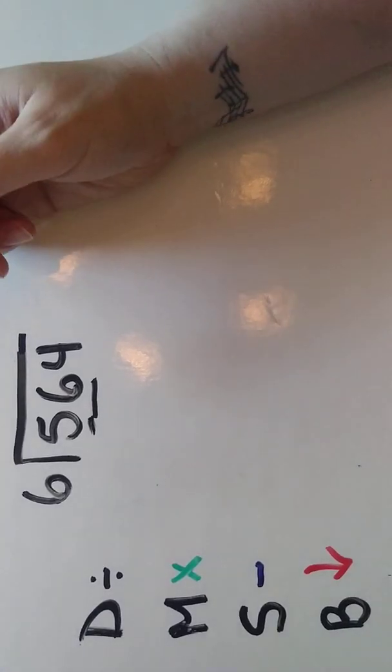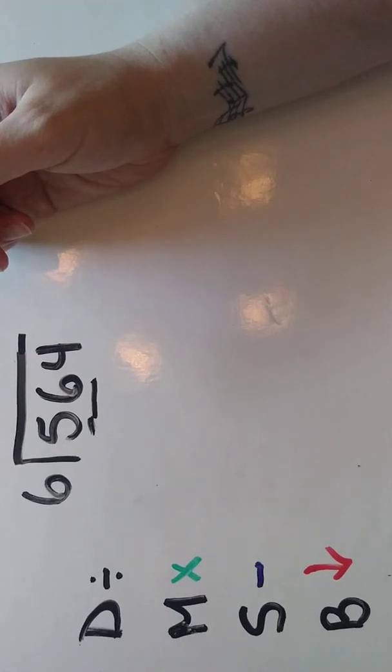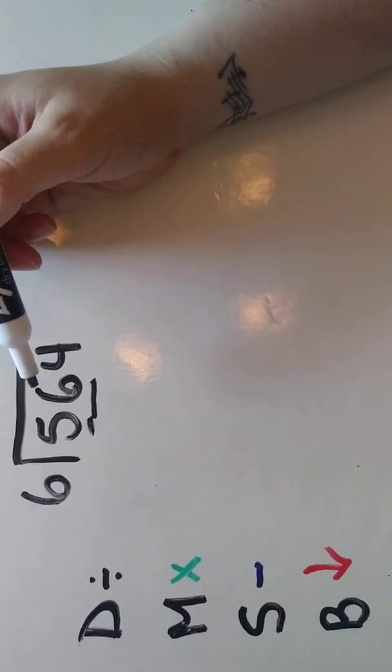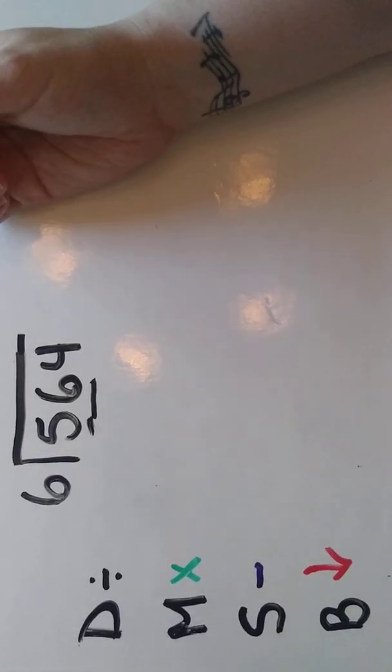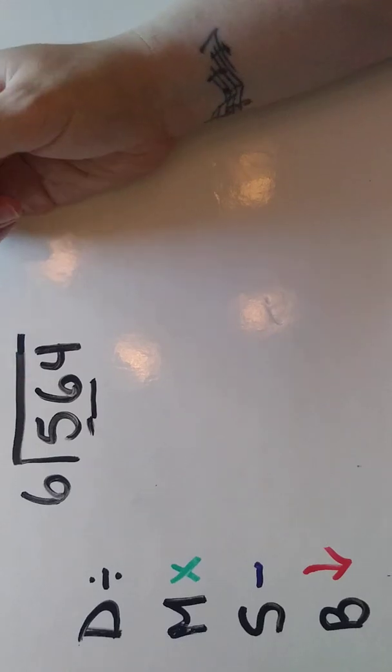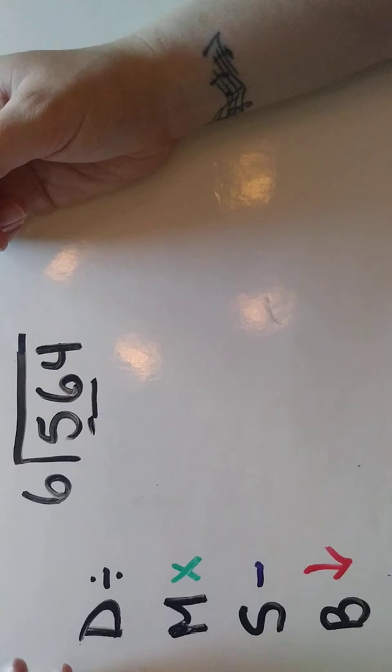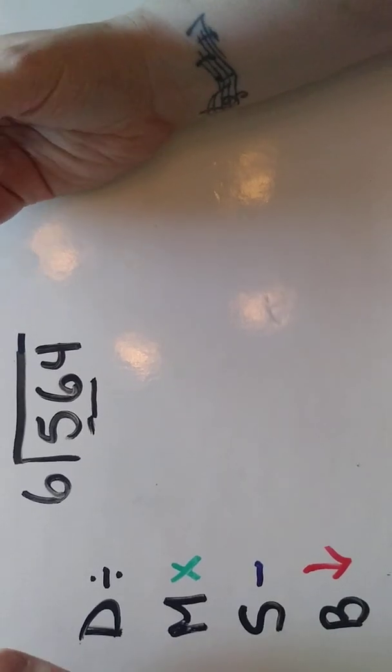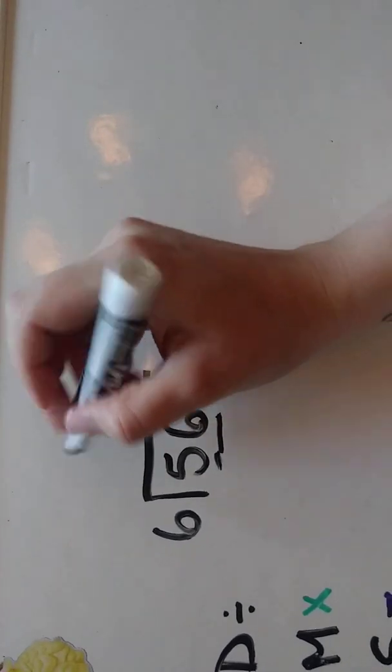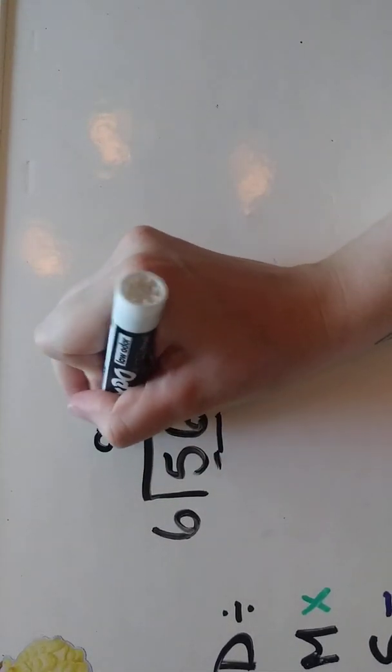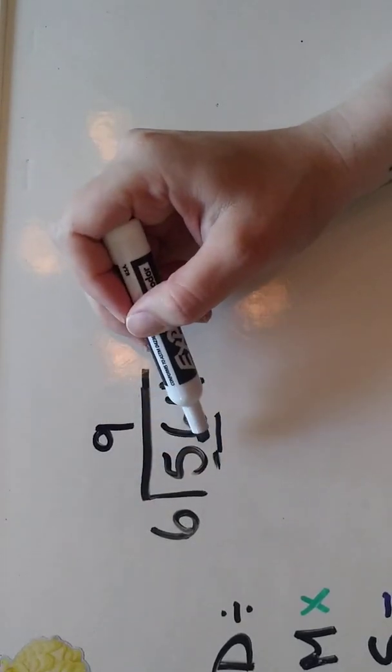When we're doing long division, it's really important that you know your multiplication tables. If you don't know them yet, that's okay, it might just take you a little bit longer. We'll figure out six times something is fifty-six. We know that six times nine is fifty-four, so we're going to use that as the number we're going to multiply by. I'm going to put my nine up here.